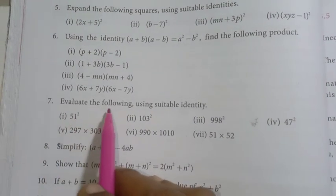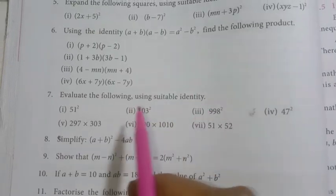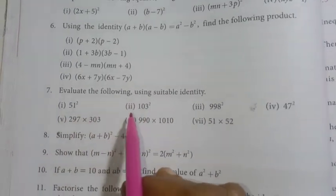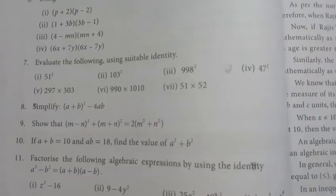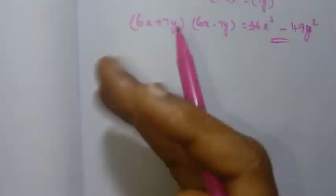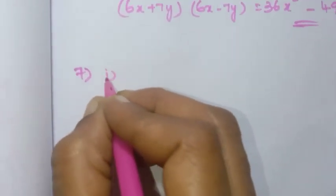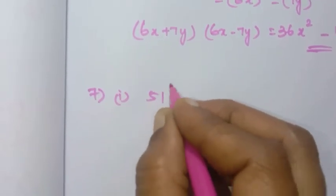Seventh sum: evaluate the following using a suitable identity. The first one is 51 squared. We write 51 as 50 plus 1, the whole square, and apply the appropriate identity.